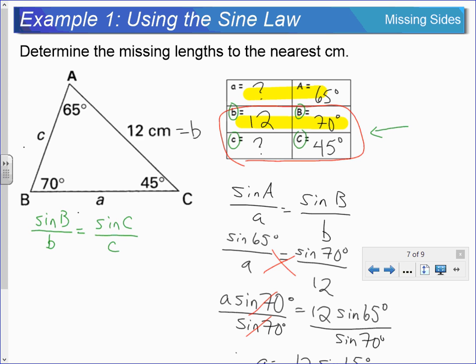So notice that I did not choose to use the top row of information. The reason being is that a ended up being 11.6 roughly. So we actually had rounding error there. So if we use a rounded value here in that formula we're going to introduce even more error in our calculation. So what we try to do is use the given information when we're solving. Sometimes that's not possible, but if and when we can. Okay, so let's keep going.